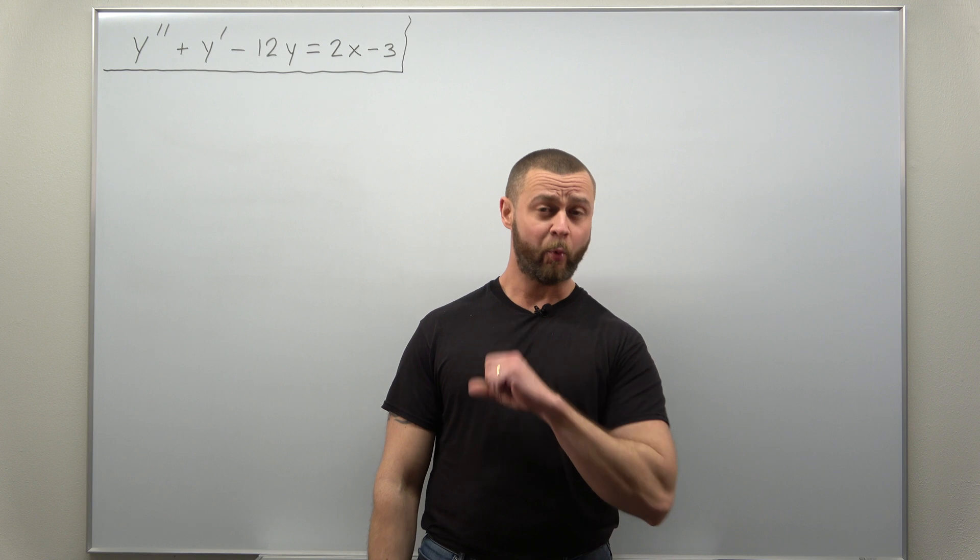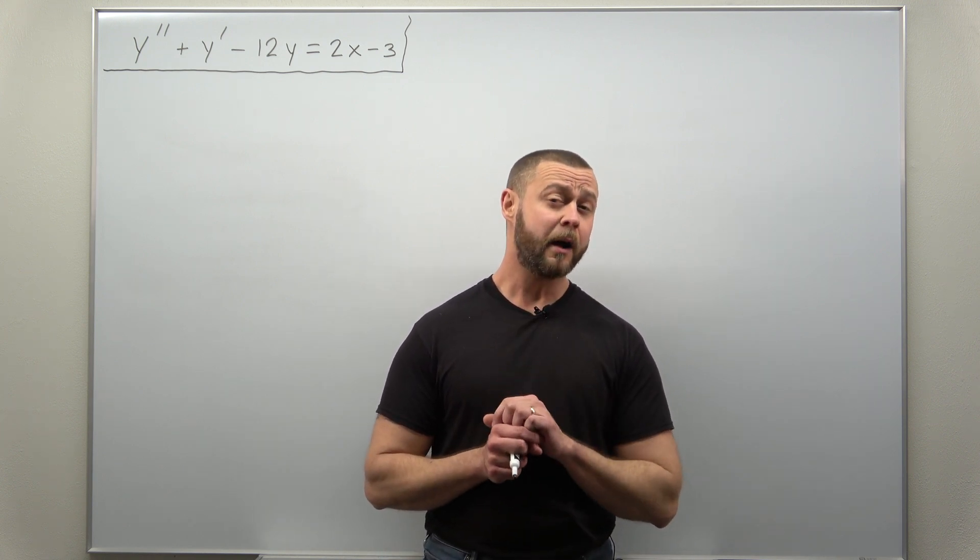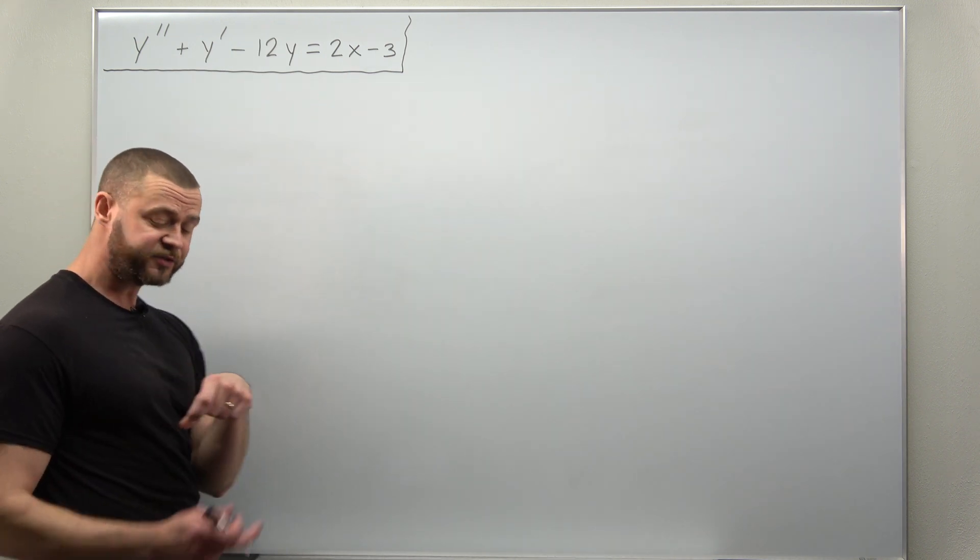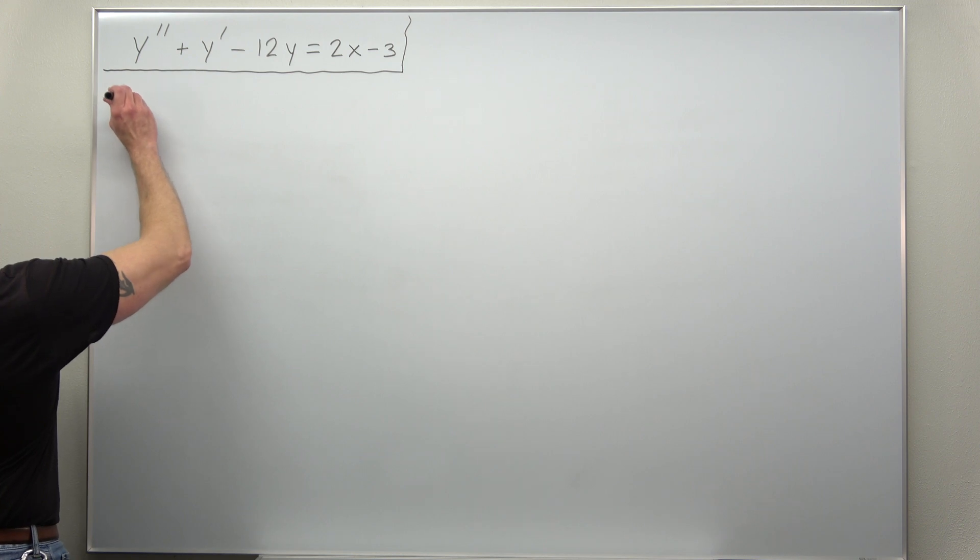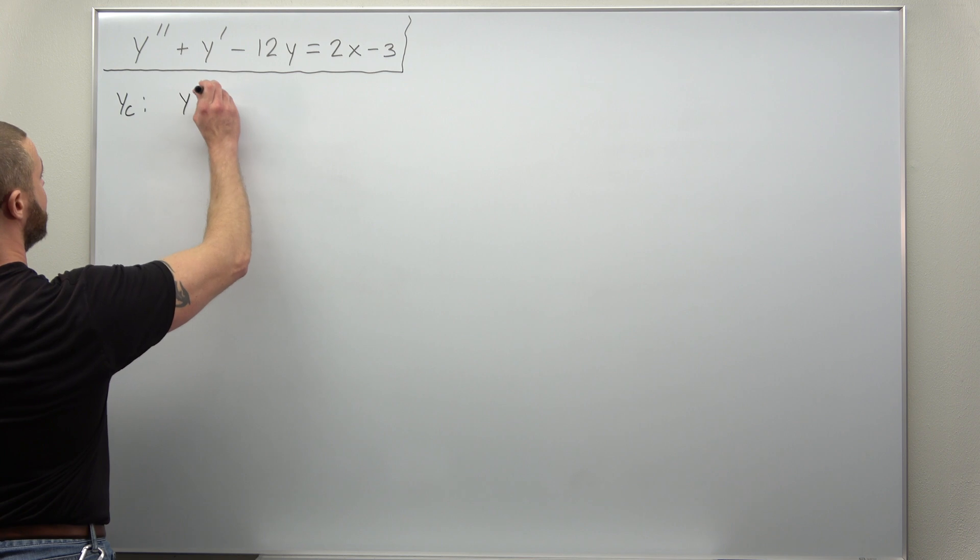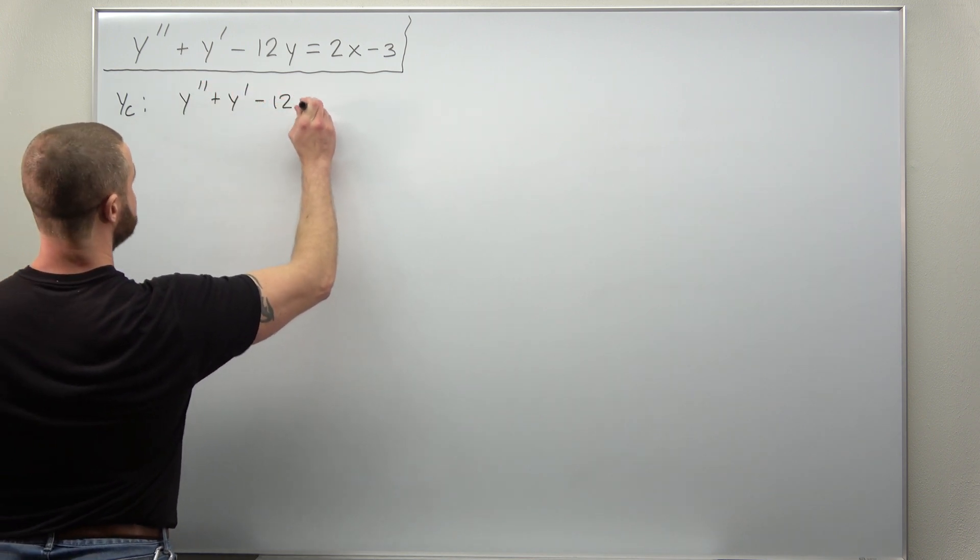So step one, always solve the homogeneous ODE for the complementary solution first. Let's set the right hand side equal to zero. We're solving y double prime plus y prime minus 12y equals zero.